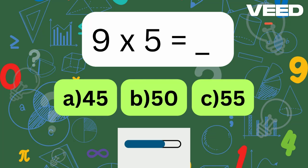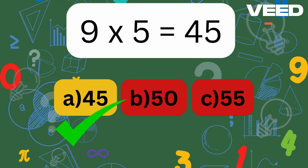What's 9 times 5? Good job, 9 times 5 is 45.